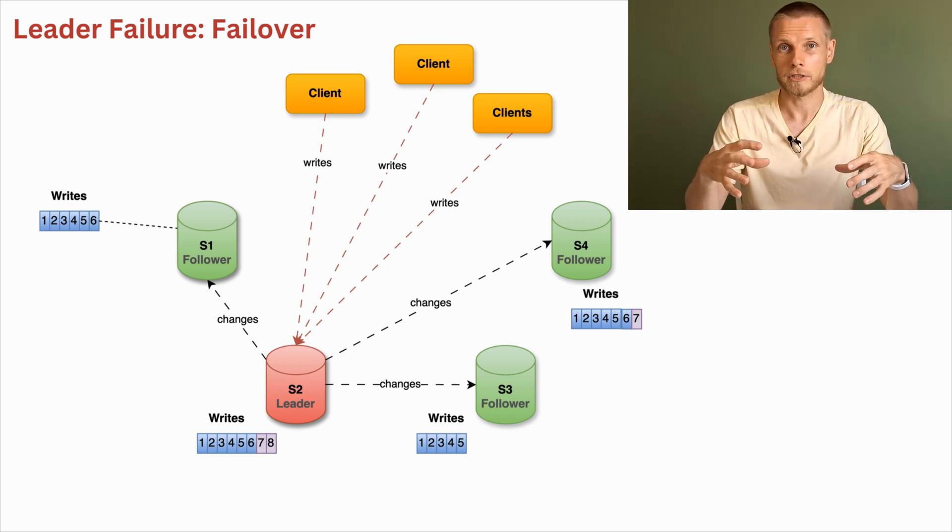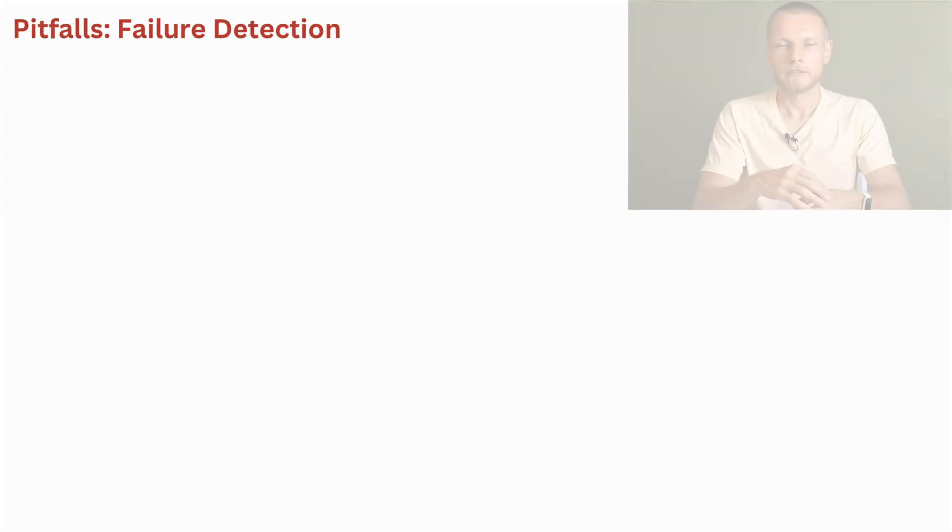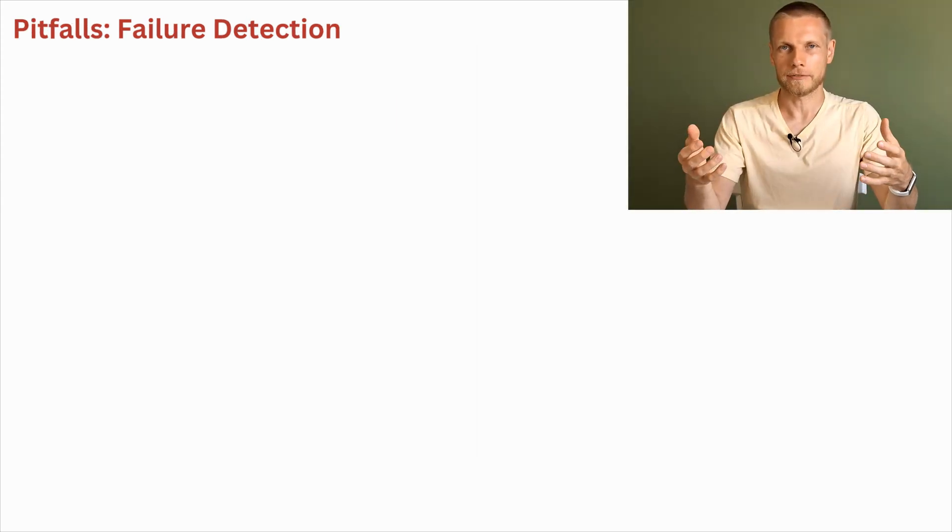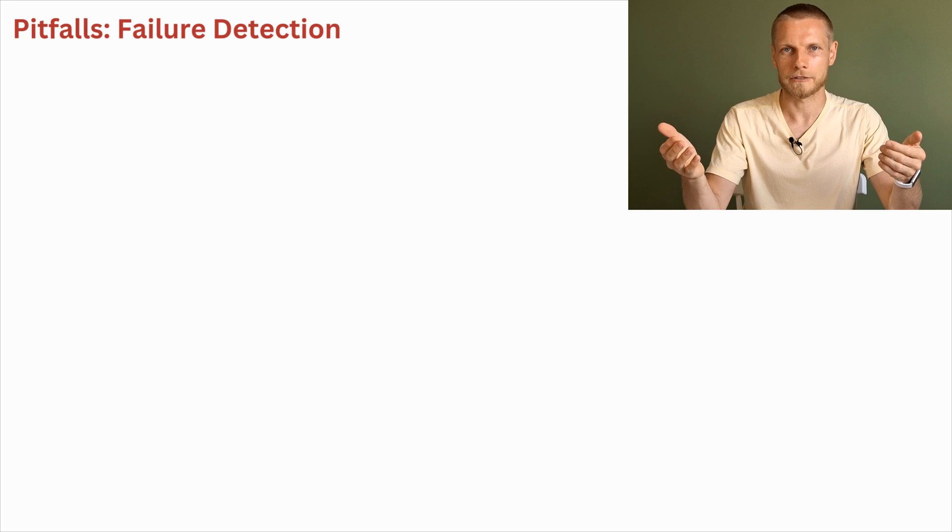So far, for just sake of simplicity, we focused on just straightforward positive scenario of the failover process. And in this scenario, everything was smooth. And further, we will look at some edge cases and some pitfalls which could happen during failover. First of all, to start the failover process itself, followers need to reliably detect that the leader has failed. And it's not as simple as it sounds.